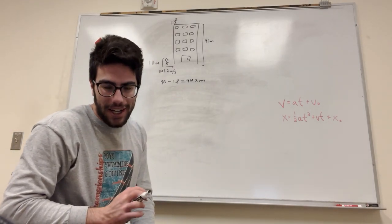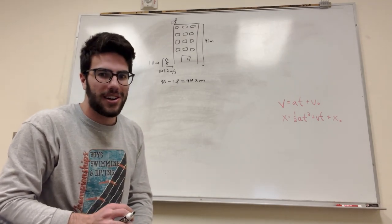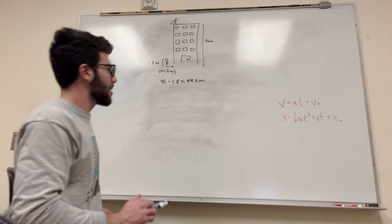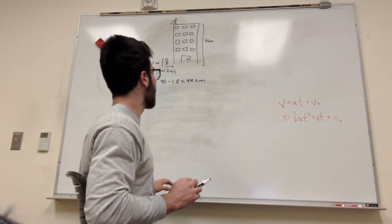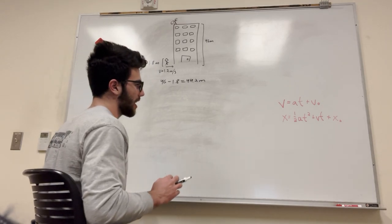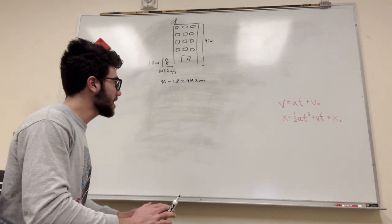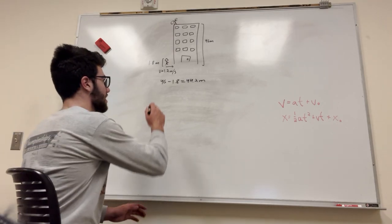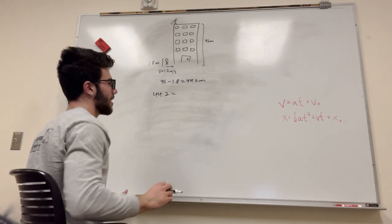Now we need to find out how long it takes for an egg to fall that long. I'm pretty sure air resistance is negligible in this problem. So, let's use our kinetics equation for distance. We already know what our distance is. We want to know that our distance is 44.2. That's what x is equal to. And what is that equal to?